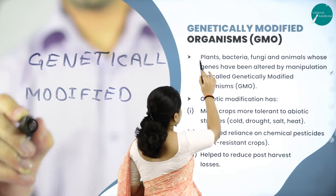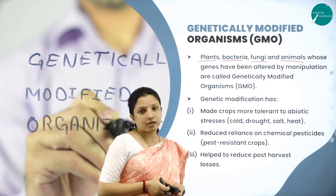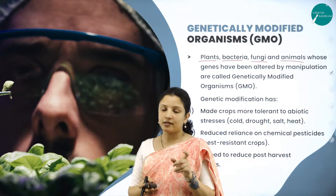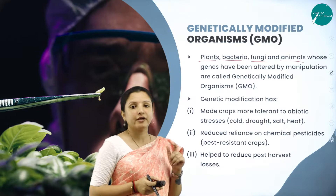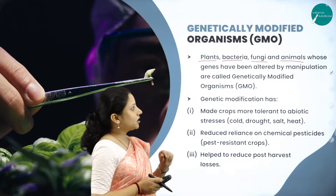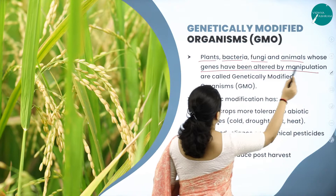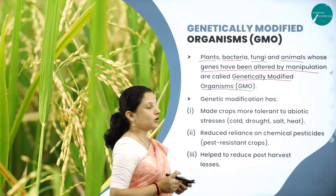So what is a genetically modified organism? As the name itself suggests — genetically modified means the genes will be altered or modified by using a suitable biotechnological procedure. An organism whose genes have been altered by manipulation is called a genetically modified organism, or in short, a GMO.